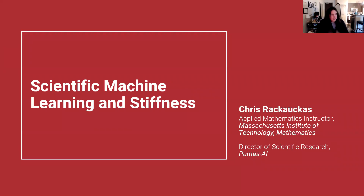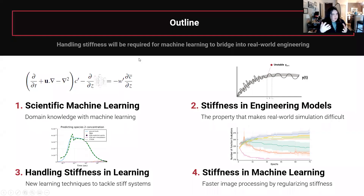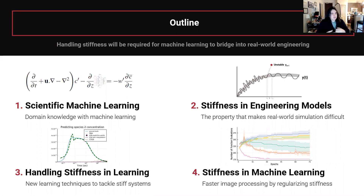Thank you for the nice introduction. I'm Chris Rackauckas, Applied Math Instructor at MIT and a few other hats. Today I'm going to be talking about the connection between stiffness and scientific machine learning. Stiffness is something you hear about in numerical analysis, but it turns out to be very relevant to the way that machine learning is done when applied to engineering systems. Solving a stiff problem well can mean a three or four order of magnitude performance difference.